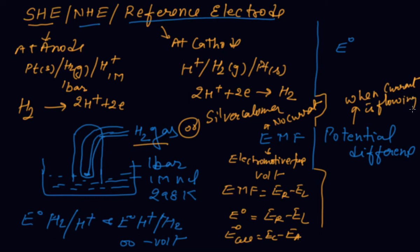When current is flowing through the circuit, we find the potential difference. EMF is the maximum voltage which can be obtained from the cell. Potential difference is less than the maximum voltage which can be obtained from the cell. EMF occurs when there is no current, and potential difference occurs when current is flowing. EMF is measured by a potentiometer.